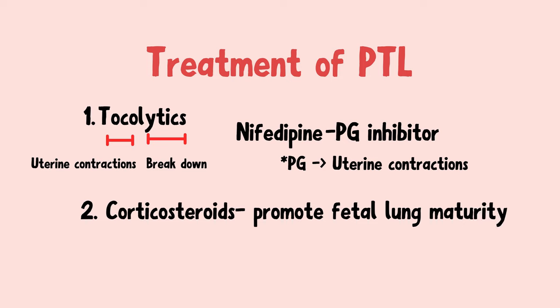Fetal lung maturity is generally considered complete at around 36 weeks of gestation. By this time, the lungs produce sufficient amounts of surfactant to help keep alveoli open. So it's crucial to give corticosteroids to promote surfactant production if you're planning on delivering a baby before 36 weeks.